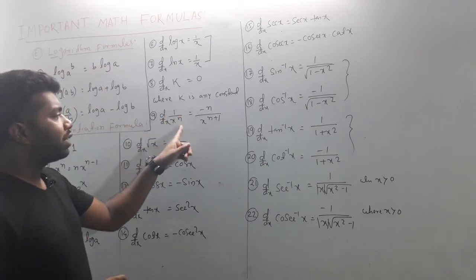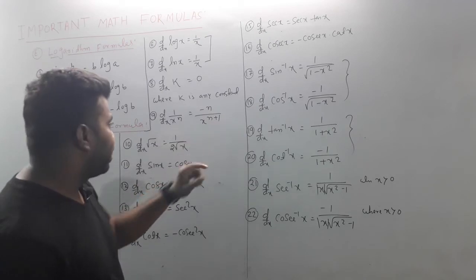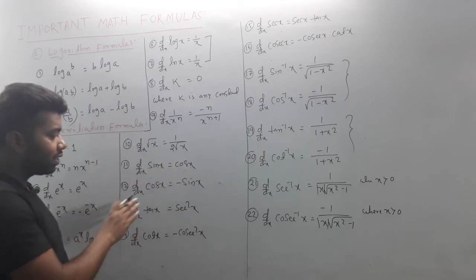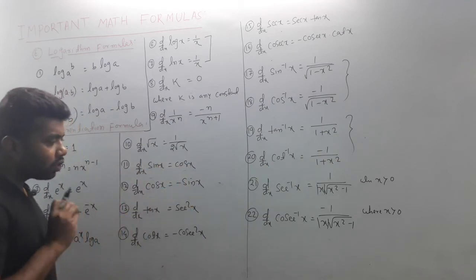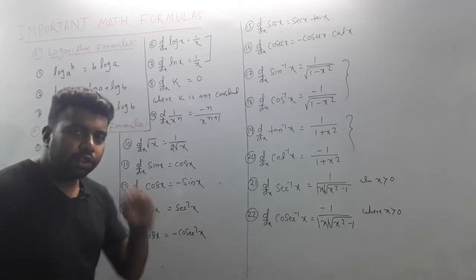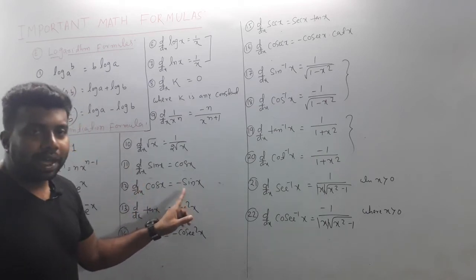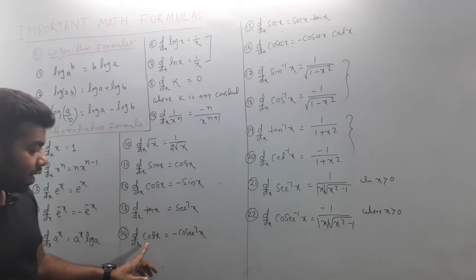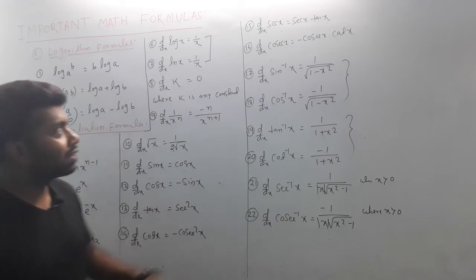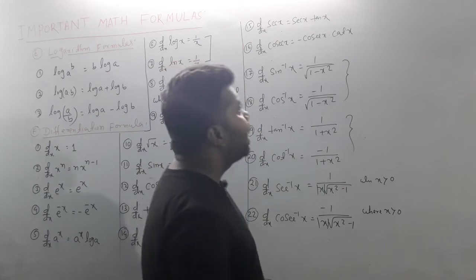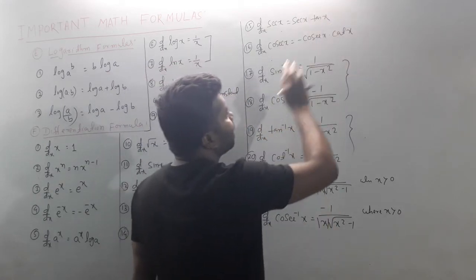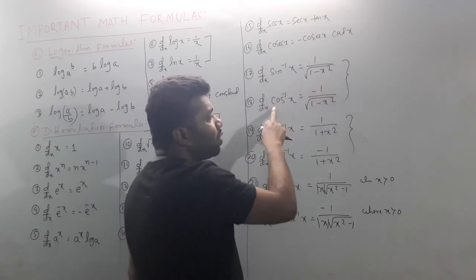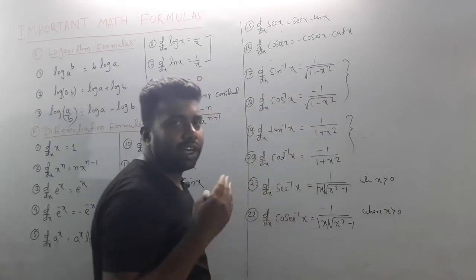d/dx of 1/xⁿ = -n/xⁿ⁺¹. d/dx of √x = 1/(2√x). d/dx of sin(x) = cos(x). d/dx of cos(x) = -sin(x). d/dx of tan(x) = sec²(x). d/dx of cot(x) = -cosec²(x). d/dx of sec(x) = sec(x)·tan(x). d/dx of cosec(x) = -cosec(x)·cot(x).